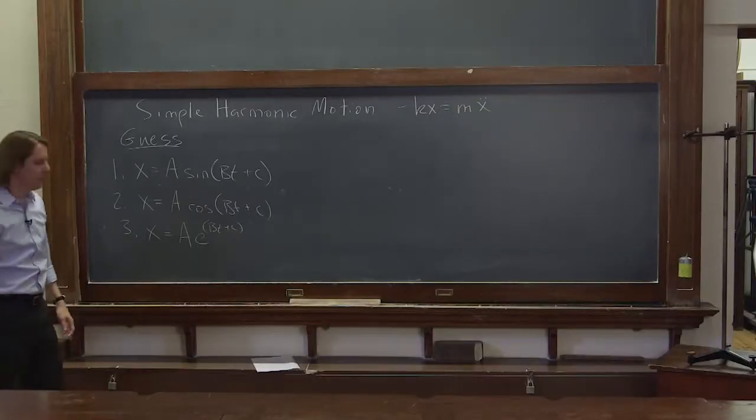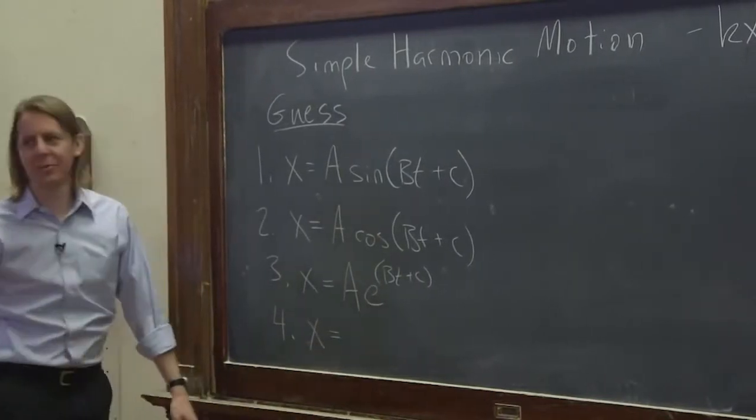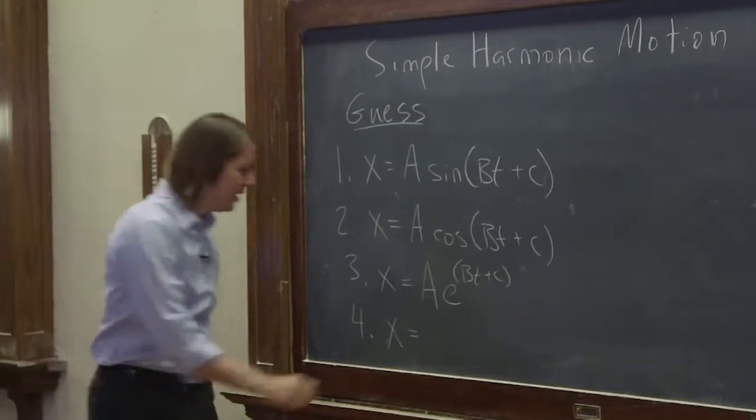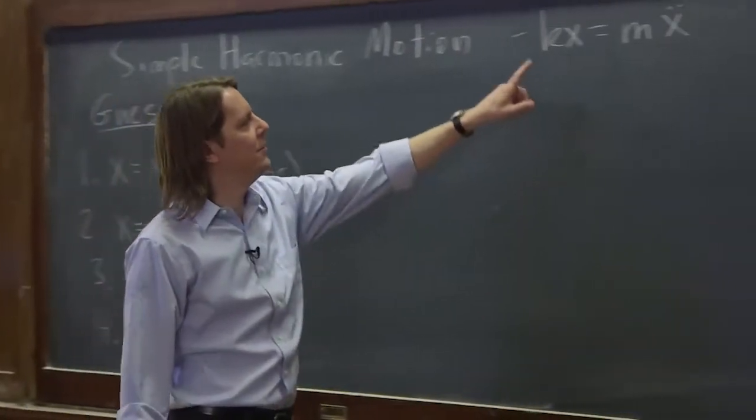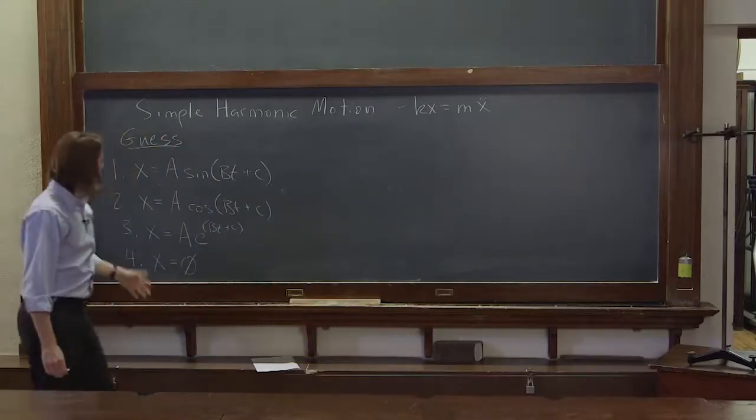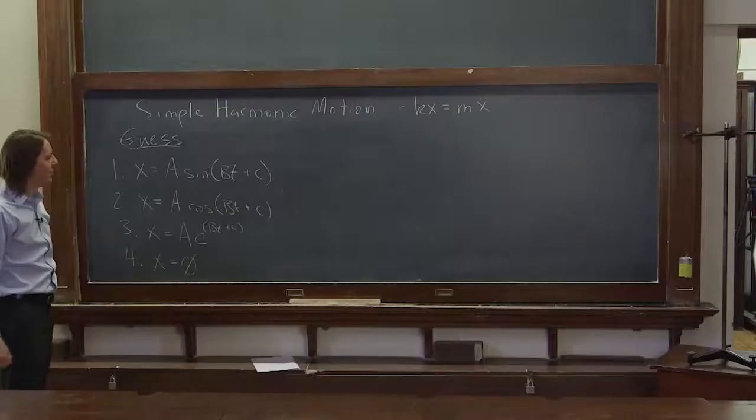There's another guess, number four. This is the easiest one that everyone overlooks. What function, what's left? Zero, right? The constant zero. If you have zero here, you take two derivatives of zero, and you still get zero. Those are sort of the fundamental four good guesses.